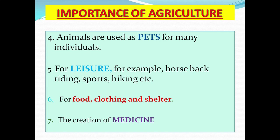Number six: agriculture provides food, clothing, and shelter. Number seven: agriculture leads to the creation of medicine. For example, marijuana is used in treating asthma and glaucoma of the eyes. Plants are used for their medicinal properties. Those are some of the key importances of agriculture.